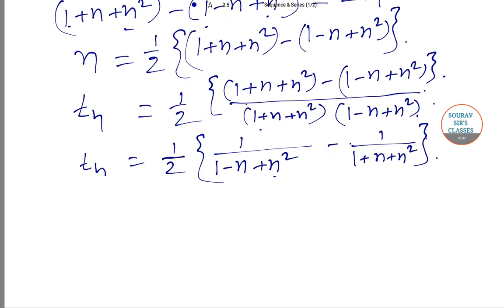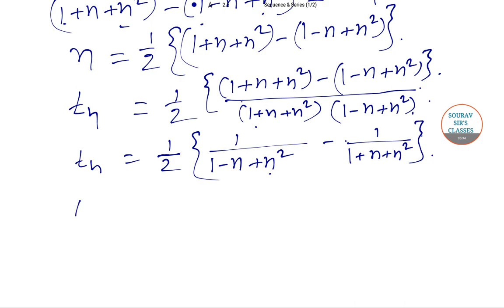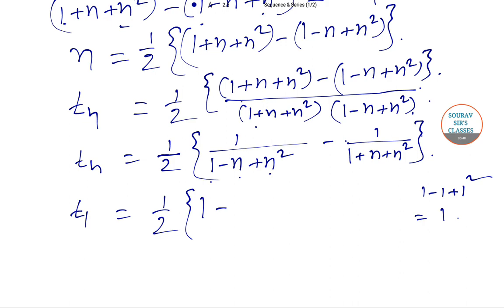Now, T₁ = ½[1/(1−1+1²) − 1/(1+1+1²)]. The first bracket: 1−1+1 = 1, so it is 1/1 = 1. The second bracket: 1+1+1 = 3, so it is 1/3. Therefore T₁ = ½[1 − 1/3].